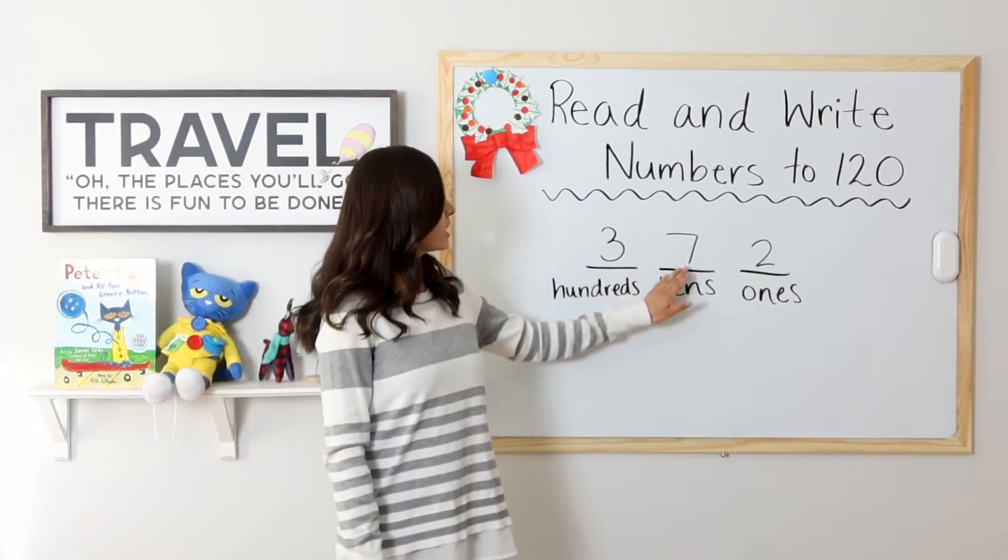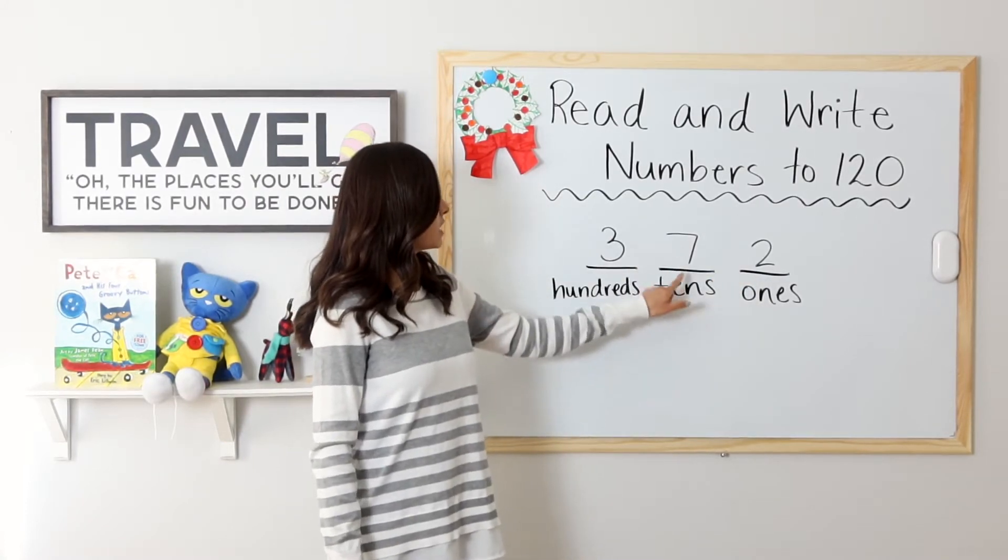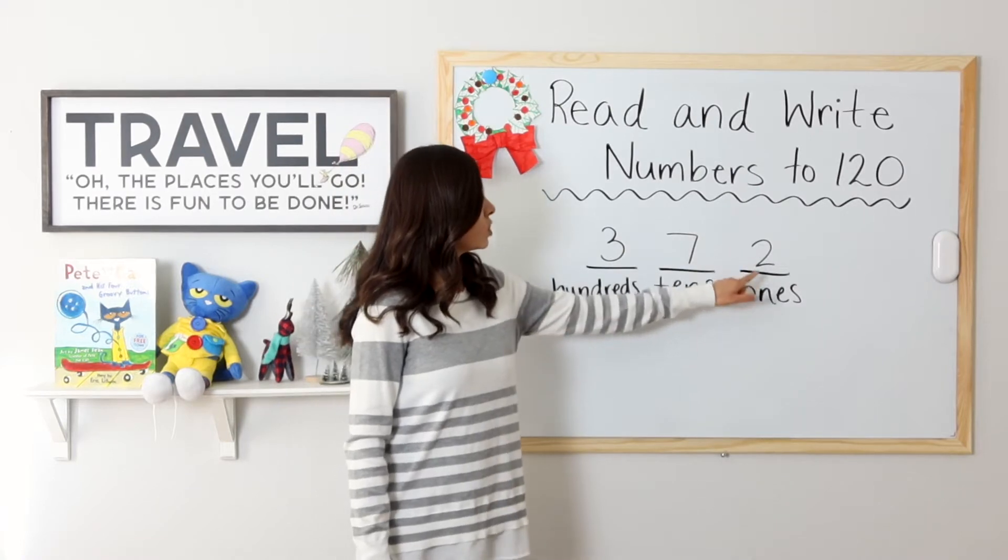I have 372. We have 300, seven tens, and two ones.